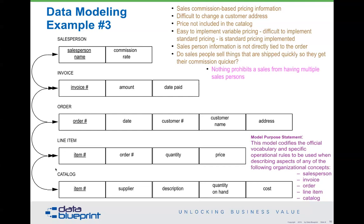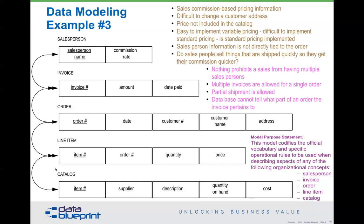There's nothing that prohibits a sale from having multiple salespersons in this model, and we have multiple invoices allowed for one order. What a complex situation — we can also ship things partially. There's no easy way of describing what actually happens in the sale, and the database can't tell what part of the order the invoice pertains to. Here's another example: a data map for a disposition concept.